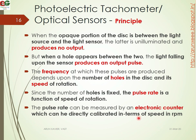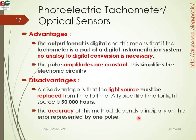The pulse rate can be measured by an electronic counter which can be directly calibrated in terms of RPM. The advantages are that the output is in digital format, so no analog-to-digital converter is necessary and the pulse amplitude is constant, simplifying the electronic circuitry. The disadvantage is the problem with the light source — it has a limited life and needs to be replaced. The accuracy depends on the error represented by one pulse.